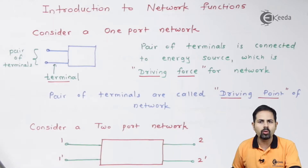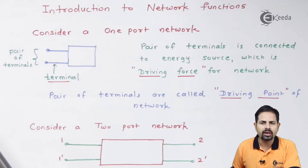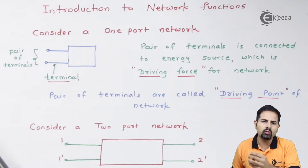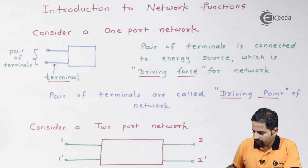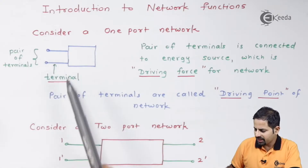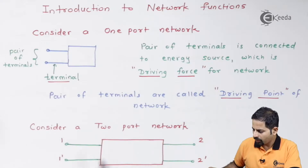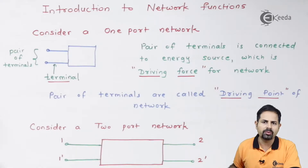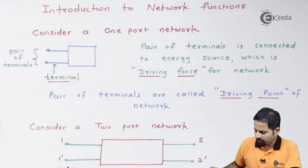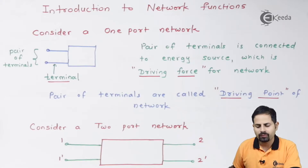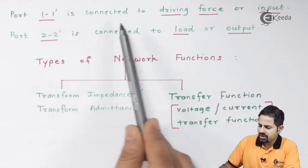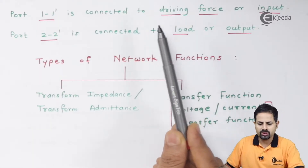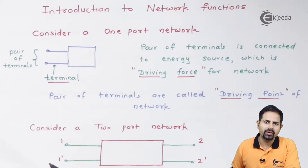There can be two-port, three-port, or N-port networks, but majorly we deal with two-port networks. A two-port network has two pairs of terminals: one is labeled one–one-dash, and another is two–two-dash. Port one–one-dash is connected to the driving force.